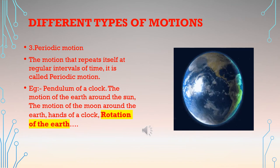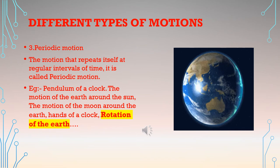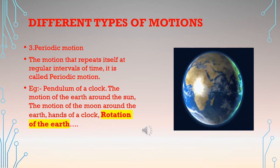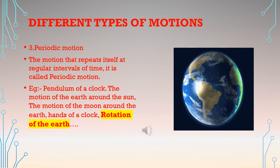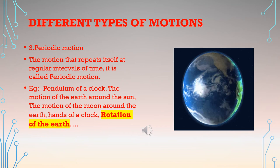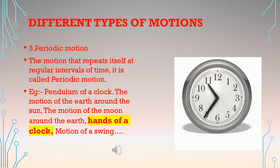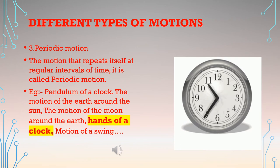The rotation of the earth is also periodic — it completes one rotation in 24 hours and then starts the next. The hands of the clock make periodic motion: the hour hand completes one rotation in 12 hours, while the minute hand completes its rotation in 60 minutes. After every 12 hours the hour hand starts the next rotation, and every 60 minutes the minute hand starts the next.